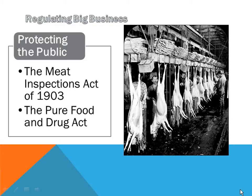Theodore Roosevelt was a voracious reader — he would read several books in one day. You would probably find him reading while doing other things. One morning he was reading The Jungle by Upton Sinclair at breakfast: one hand had the book, and the other hand had his Frosted Mini-Wheats.